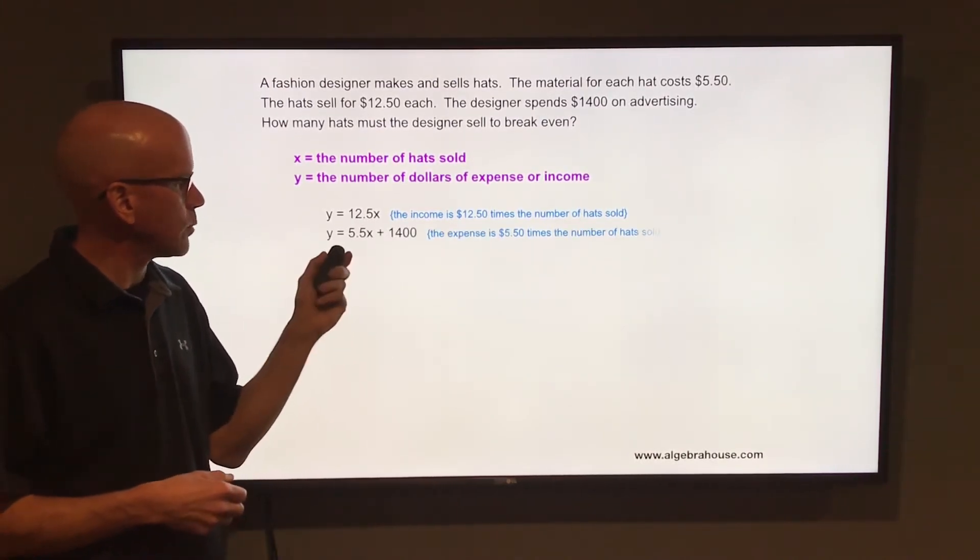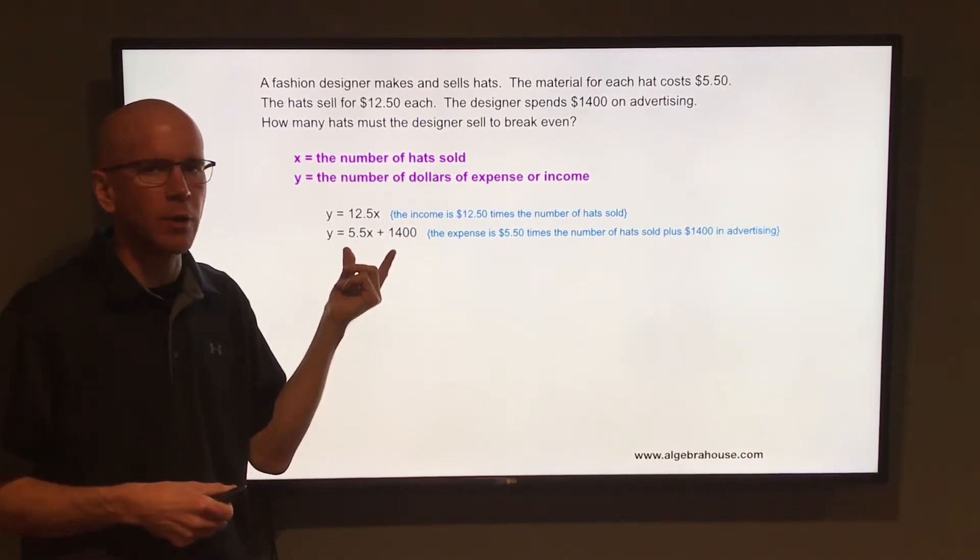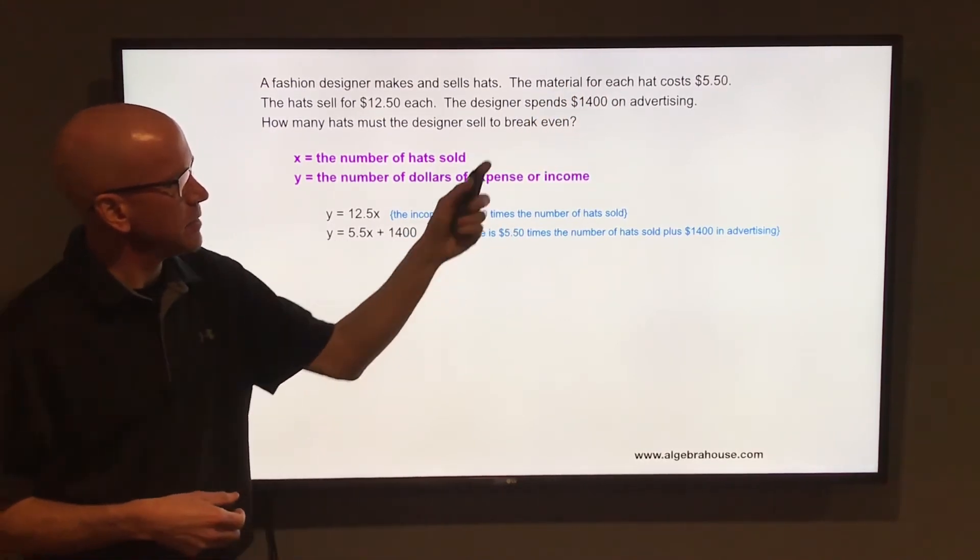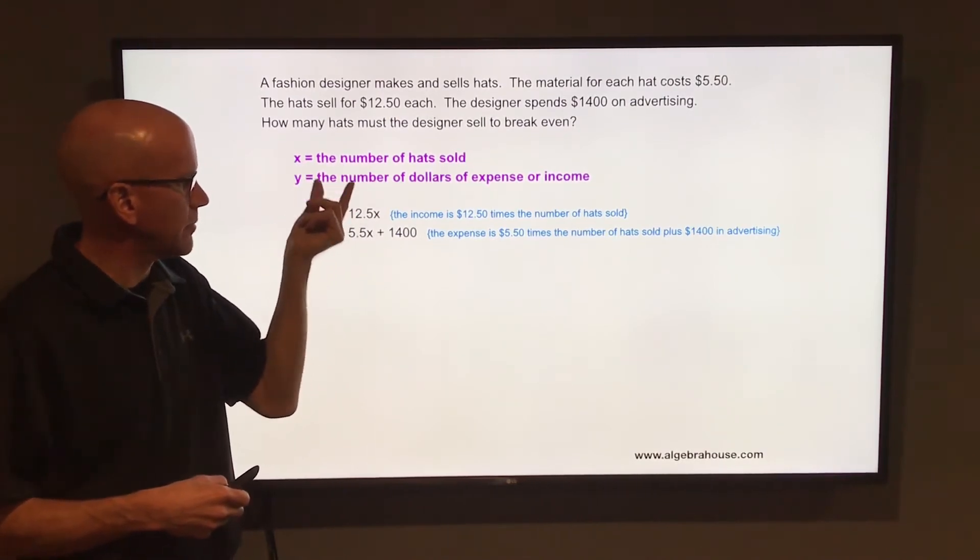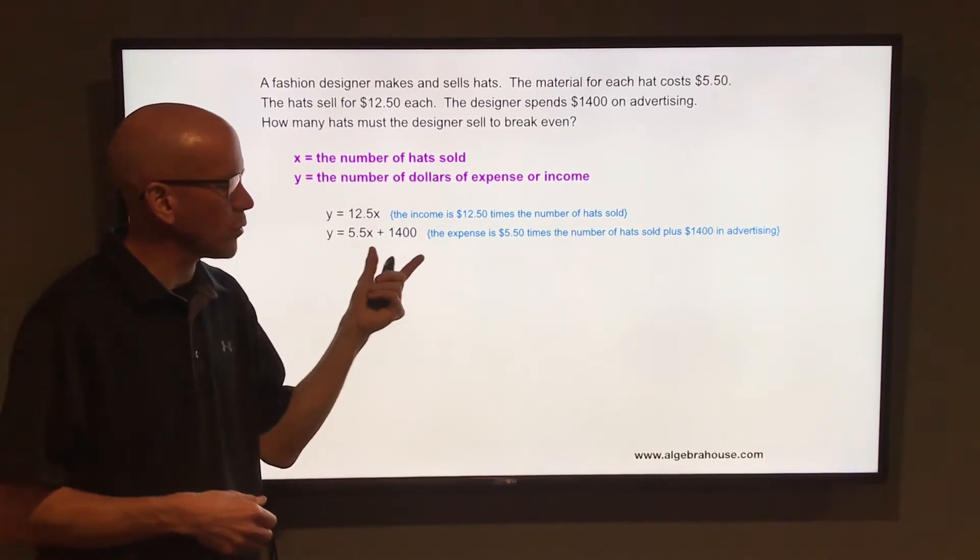Another equation is going to be Y equals 5.5X plus $1,400. This is the expense equation. The material for each hat costs $5.50 and the designer spends $1,400 on advertising. So if you take 5.5 times the number of hats plus that $1,400 in advertising, that is the total of the expenses.